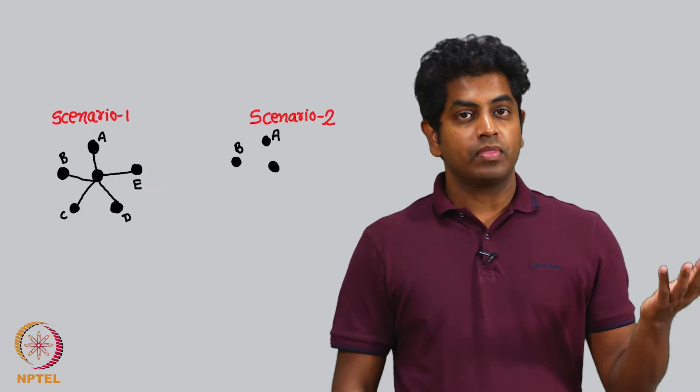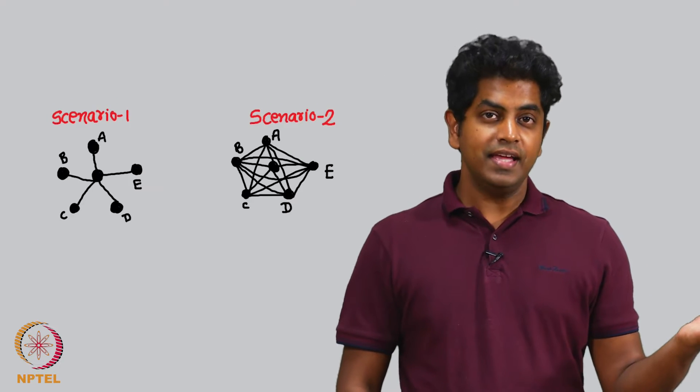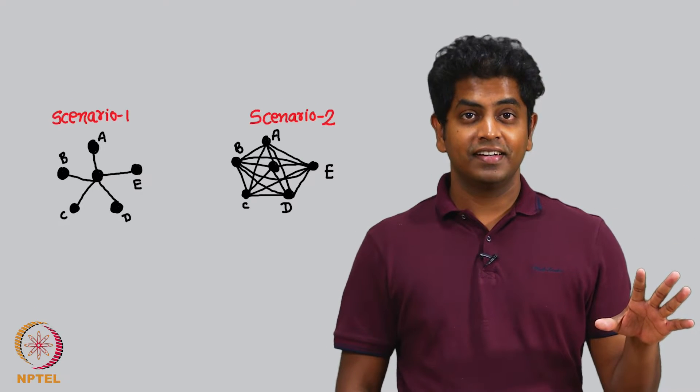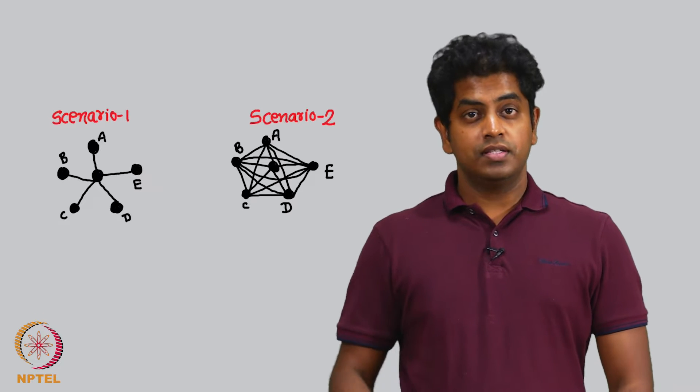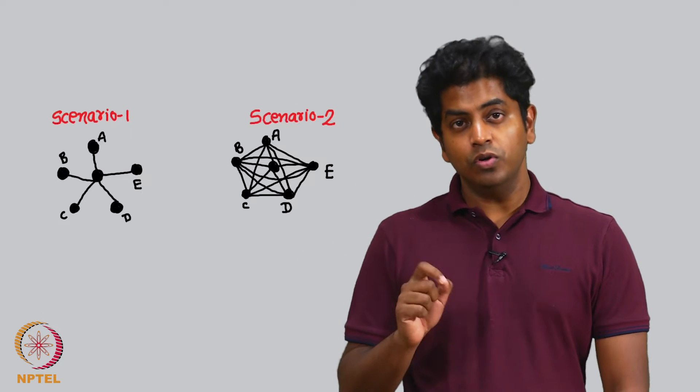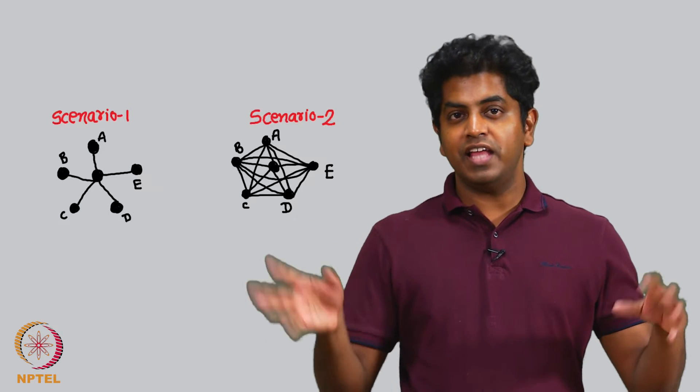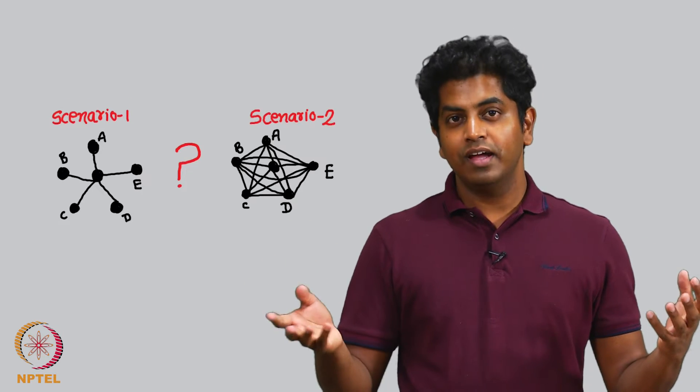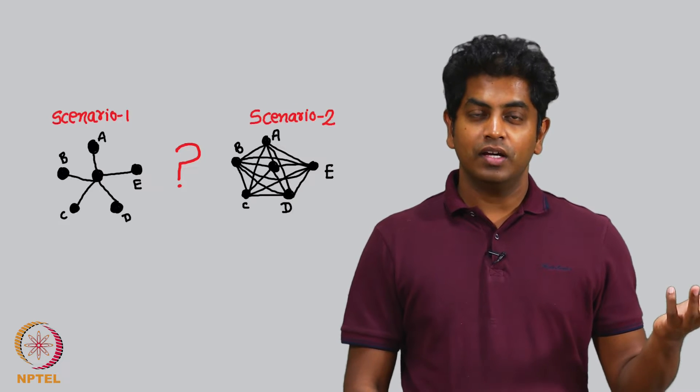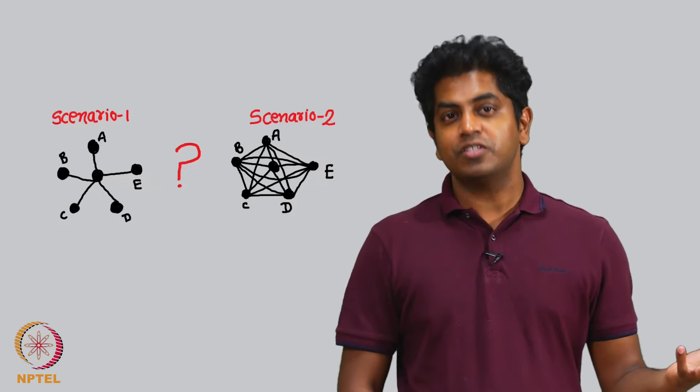Assume two scenarios. Scenario one is I have five friends A, B, C, D and E, and none of them know each other. Scenario two, I have these five friends A, B, C, D and E, and all of them know each other. Which scenario would you favor? Obviously scenario two - you want your friends to know each other.